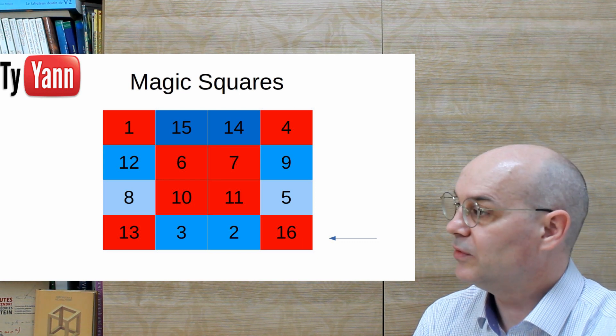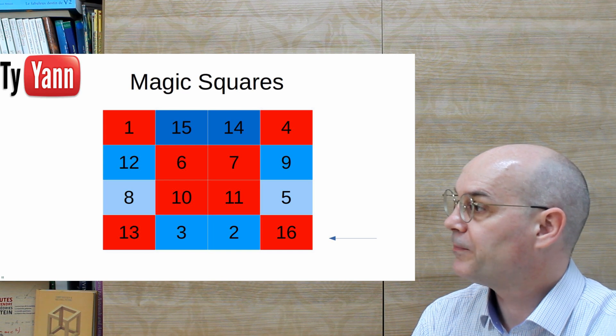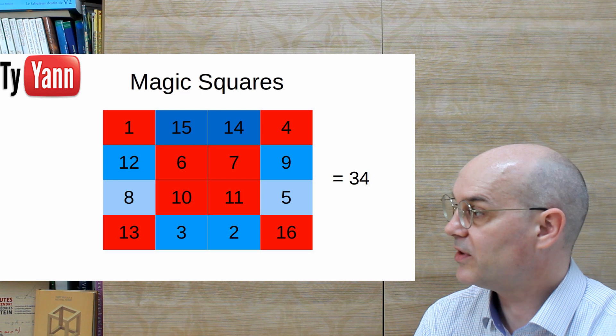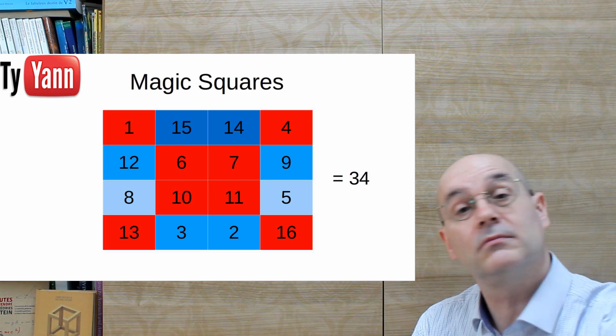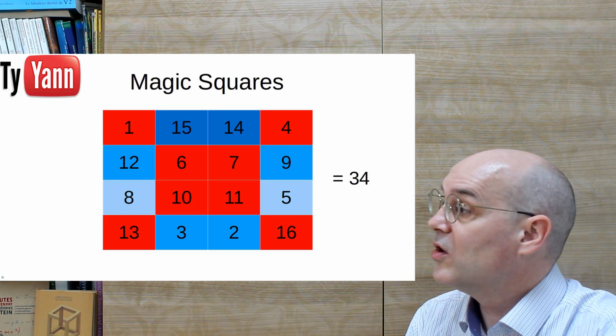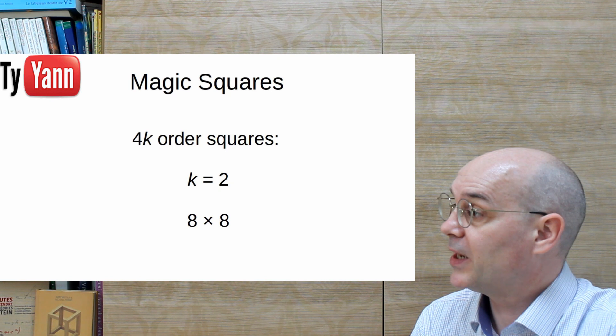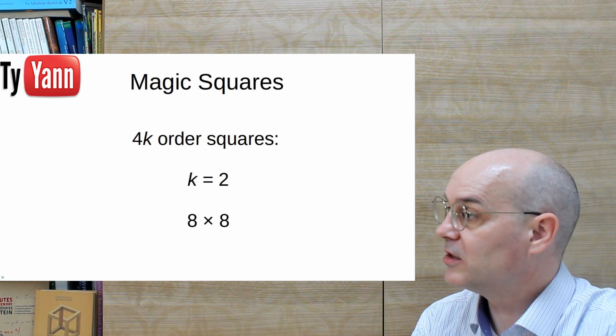And we're done. We have a beautiful 4x4 magic square with a magic constant being equal to 34. And that's it. So let's do it again. Let's do it again with a k equals to 2, and so an 8x8 magic square.